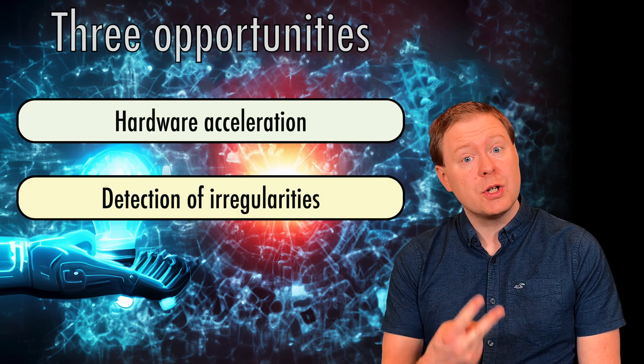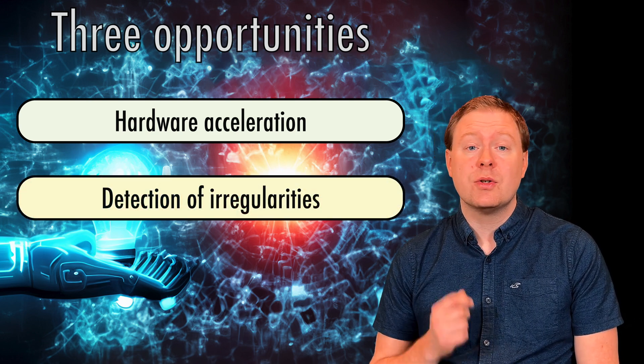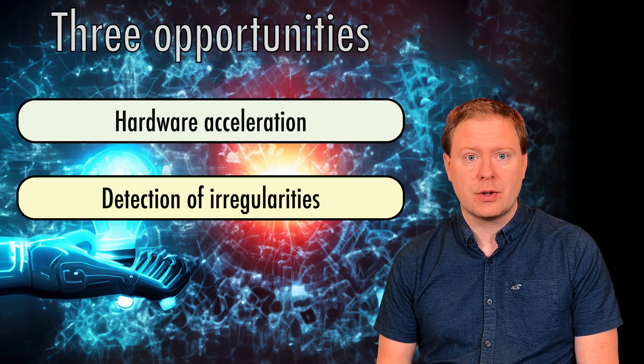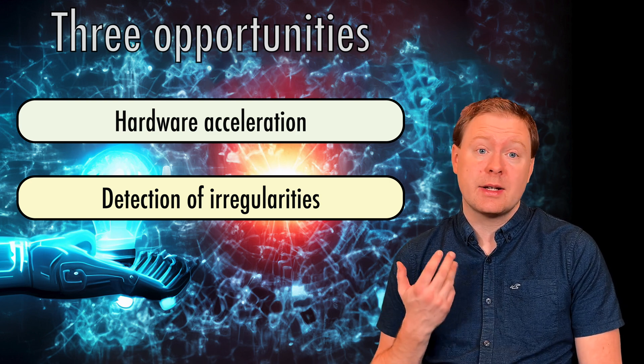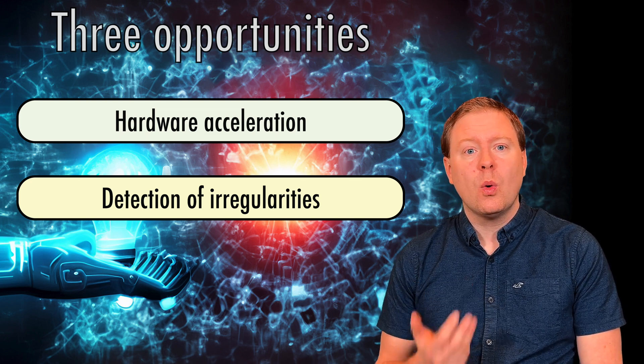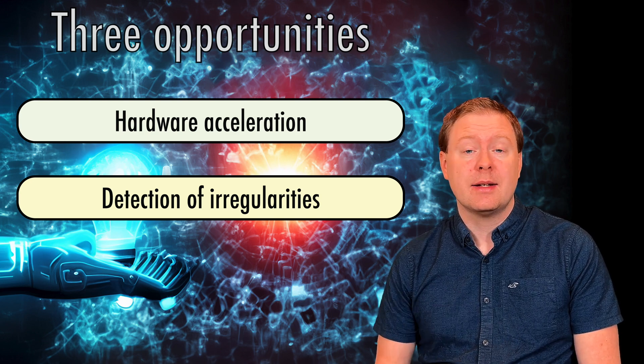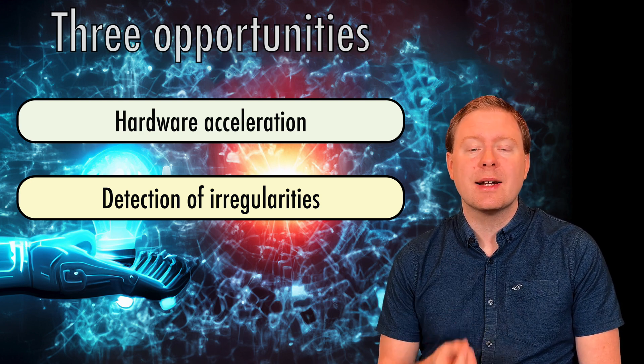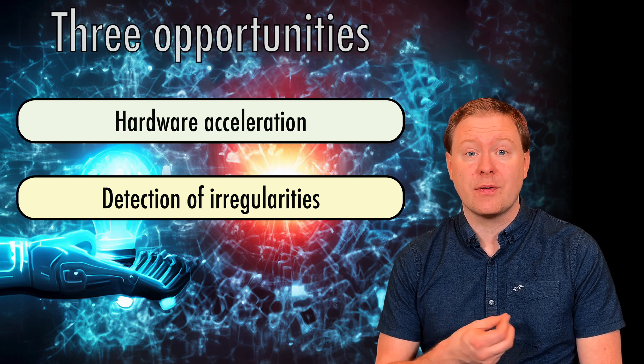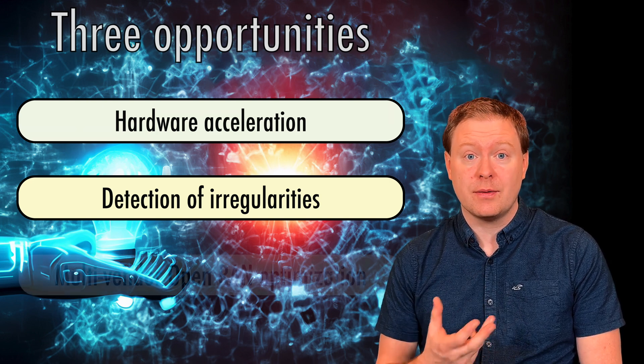The second opportunity is to use AI to detect irregularities in the network. This could both be different kinds of security breaches or changes in the patterns that we see in the input data that should trigger that we re-learn how to operate certain algorithms. And we can do this on the fly.